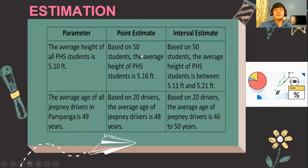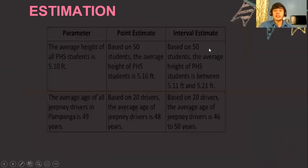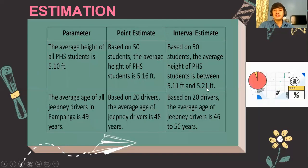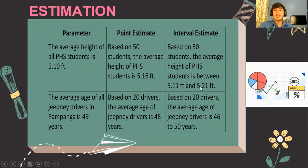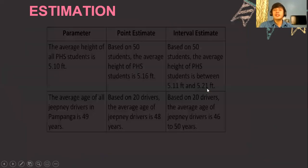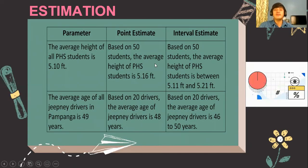When we report that value, it undergoes a sampling distribution. For the interval estimate, when you want to report a range of two values, based on 50 students, the average height of PHS students is between 5.11 feet and 5.21 feet. We can easily distinguish the difference between a point estimate and an interval estimate.